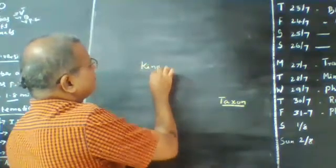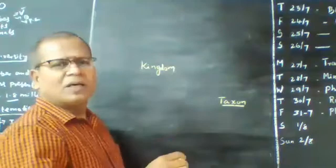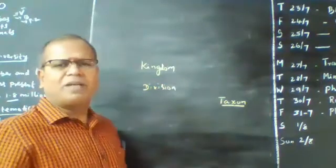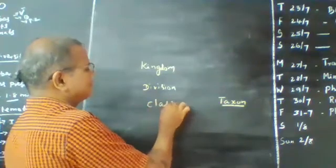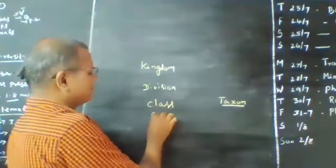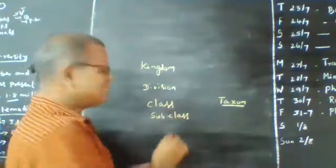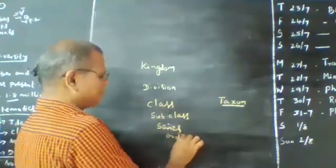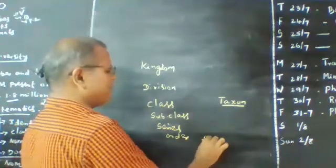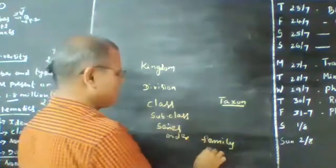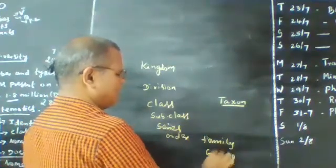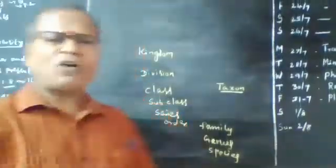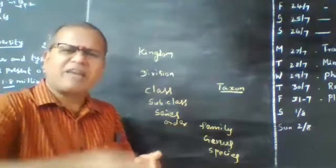The hierarchy begins with Kingdom — plant or animal kingdom — followed by Division (or Phylum), then Class, Subclass, Series, Order, Family, Genus, and finally Species. The basic unit of classification is called species. Below species, subspecies and varieties are also available.